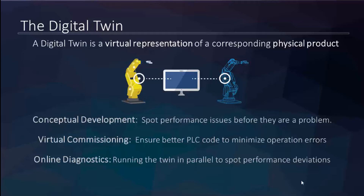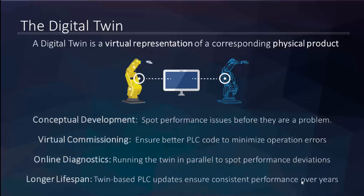Digital twins also help with online diagnostics: you run the digital twin in parallel with the actual physical machine and can spot performance deviations easily — whether it's motors failing or friction somewhere. It's like the ultimate diagnostic guidebook. And all of this helps ensure a longer lifespan for your product. As the physical machine ages and performs differently, having a digital twin running alongside it gives you a much greater range of options — perhaps adding load to a motor, or reducing cycles per minute slightly to maintain great performance from an older machine.